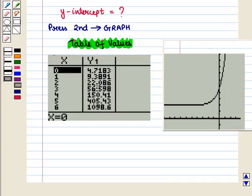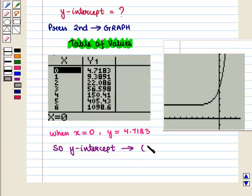Now in table, we see that value of y where x is 0. See here in the table, when x is 0, y is equal to 4.7183. So y-intercept is given by the coordinates 0, 4.7183.